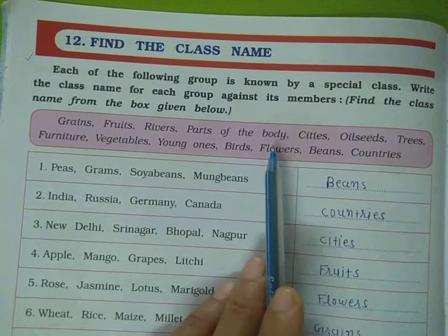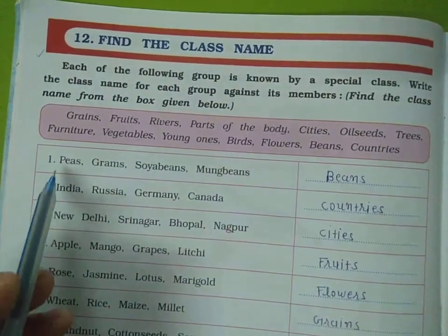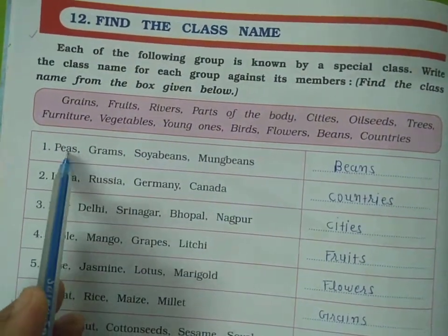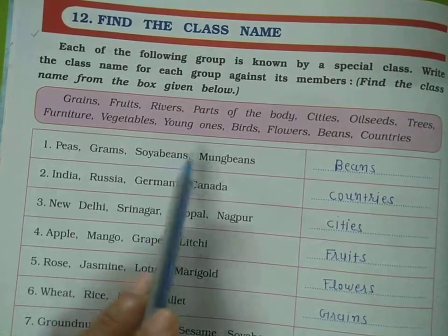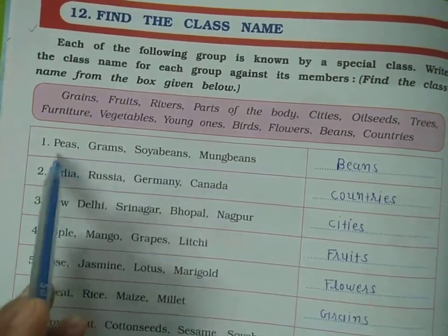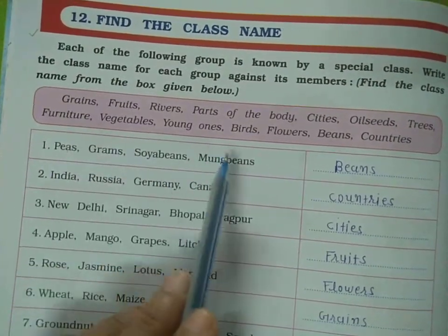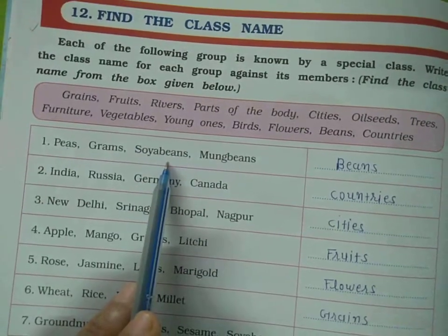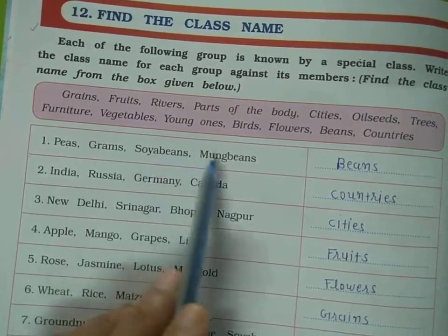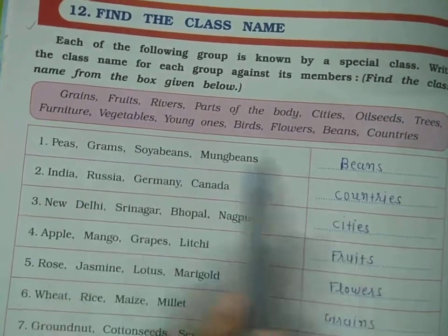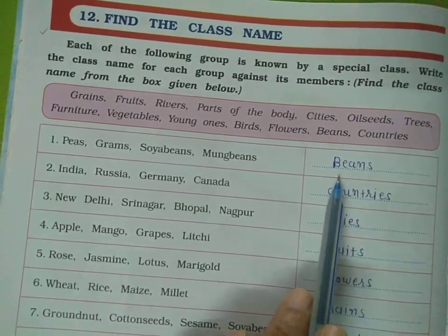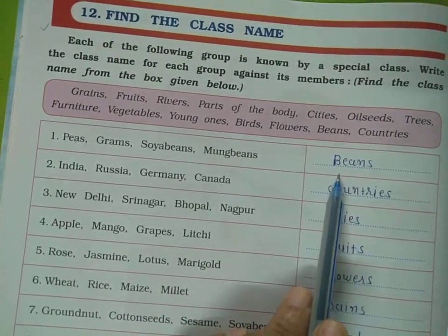The first group has: peas, soya beans, and mung beans. So write here — beans.